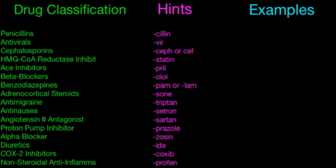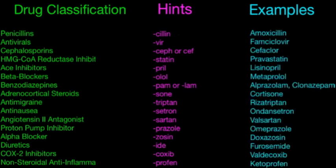A few examples: for -cillin, amoxicillin — whenever you see a drug ending in -cillin, you know it's going to be a penicillin. This is going to help with reactions because if a patient is given four different medications ending in -cillin, you can flag that as a potential drug interaction concern. Famciclovir — that's going to be your antiviral.